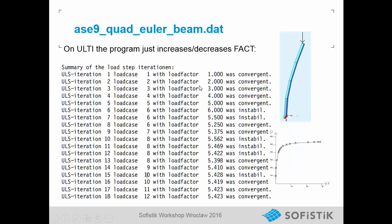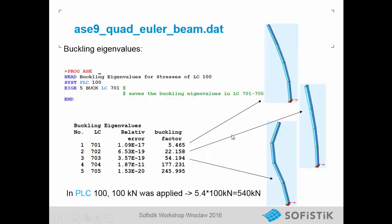Again we see here the technique of the ALTI load increase. Now we want to make buckling eigenvalues on this example. We see a load factor of 5 for the first buckling eigenfrequency; the second is horizontal in the other y-direction, and so on. The load factor of 5 means it is 5 times greater than the applied load. We applied 100 kN, so that gives 500 kN — matching 540 kN.